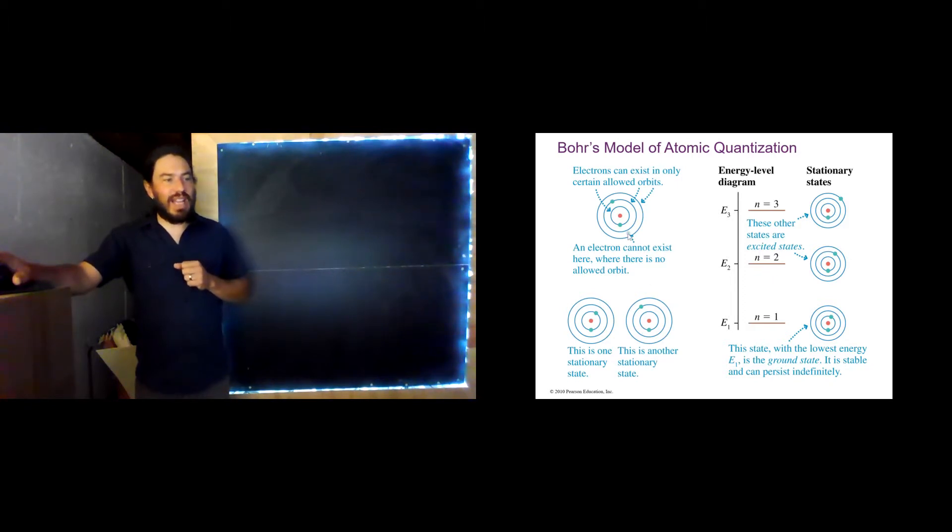But the electron can never exist where there's no allowed orbit. Again, in his initial proposal, Bohr didn't really have a reasoning for why this is. He just said, hey, I think this might be how it works.